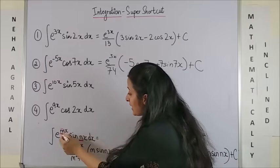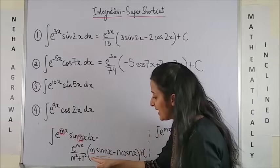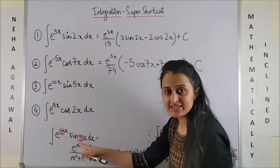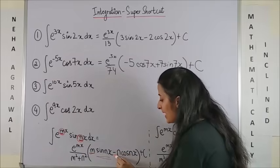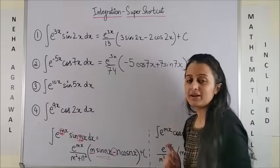You write m and then into sine nx, which is there in the function, minus n cos nx plus c.